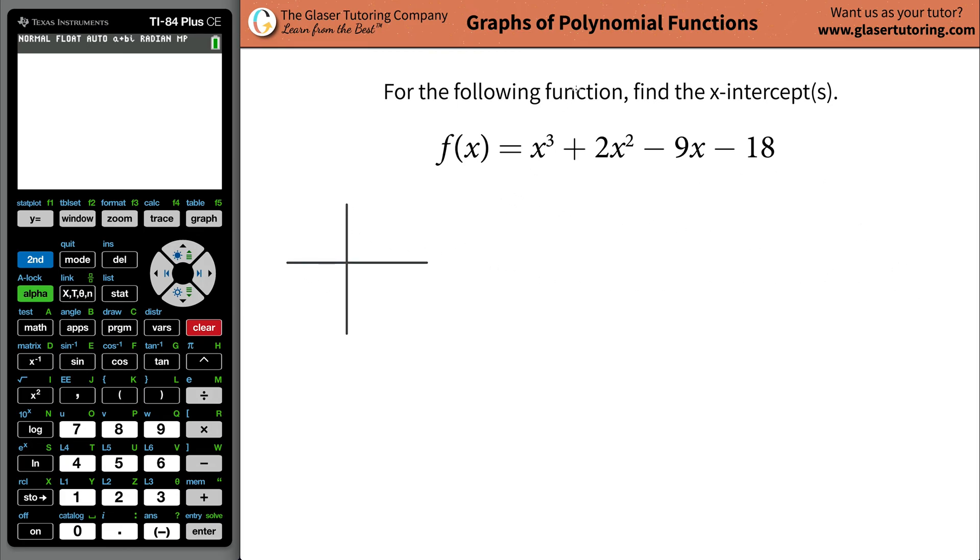So, first thing is, what in the world are x-intercepts? Well, pretend you have a function. This kind of looks like a cubic a little bit. And let's identify now what we mean by x-intercepts. Remember, the x-axis is always written horizontally. The y-axis is always written on the vertical axis. The x-intercepts here are going to be the points where the function intersects, crosses, or touches that x-axis.